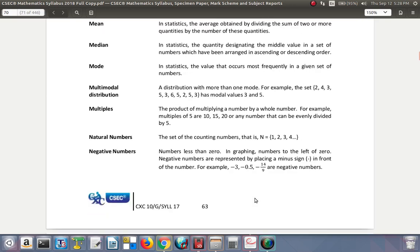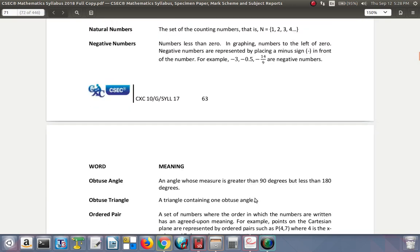Negative numbers: numbers less than 0. In graphing, numbers to the left of 0. Negative numbers are represented by a minus sign in front of the number. For example, you have negative 3, negative 5, negative 14.9 are negative numbers.